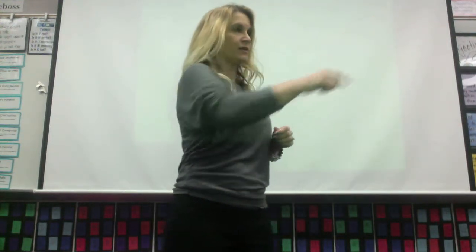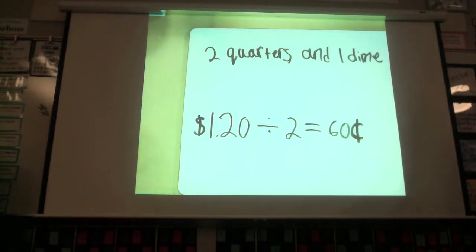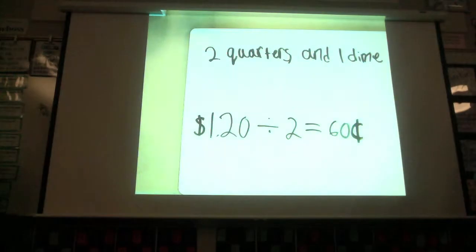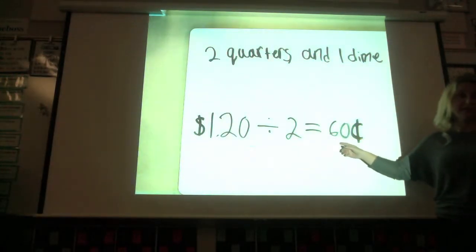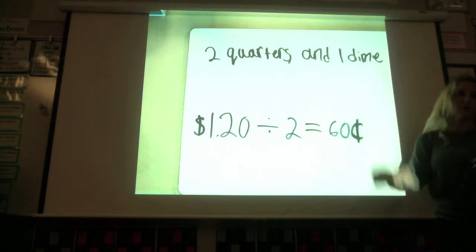All right, we'll start with this table. What did you do, Jayden? What did your group do? My group divided, we started with 12, so we just took out the 0 and divided 12 by 2, and that equaled 6. Okay. And then we added the 0, and we got 60, and then we wrote two quarters, and that equals 50, and a dime equals 10. So we put 60 cents because the question asked, how can you split $1.20 with a partner? Okay, so you came up with the answer that you were going to have 60 cents each, and then you explained how that would work in coins.